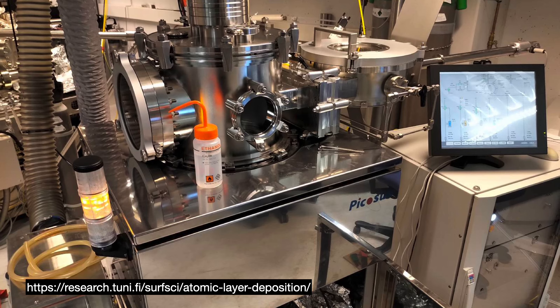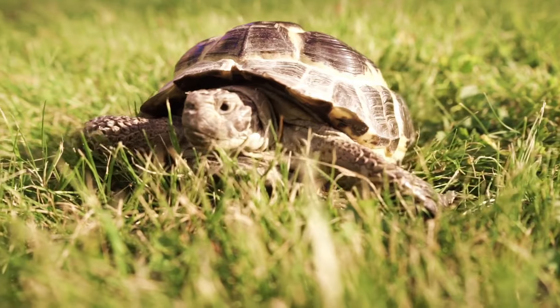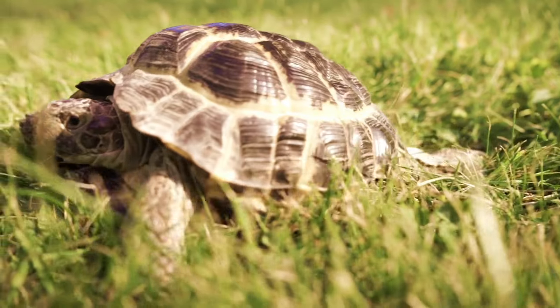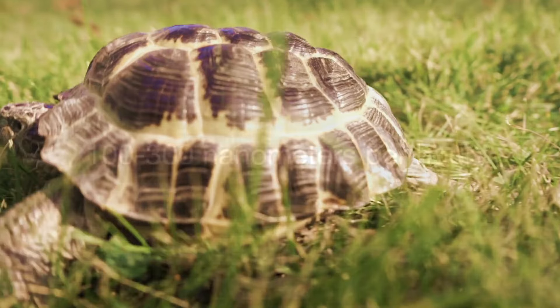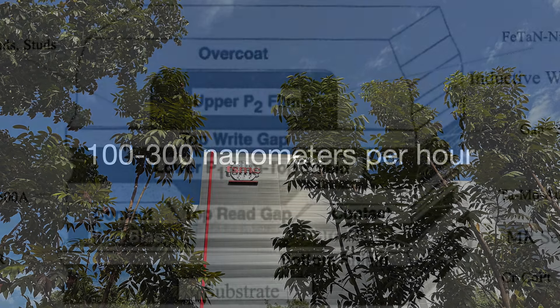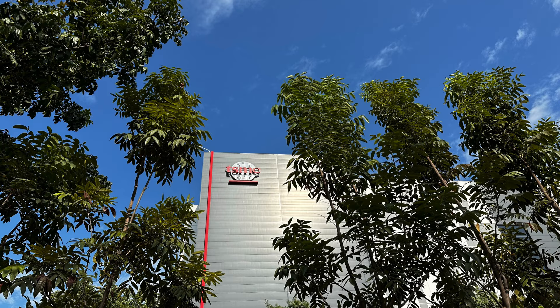Second, traditional ALD suffers from a slow rate of deposition. For instance, ALD deposits aluminum oxide layers for a hard drive disc head at about 0.11 nanometers per cycle, or 100 to 300 nanometers per hour. Low throughput is a serious concern for any semiconductor fab, but it isn't a deal breaker for a couple of reasons.